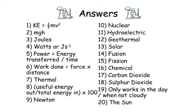Number seven: thermal. Number eight: useful energy out divided by total energy in, all multiplied by 100. Number nine: the newton. Number ten: nuclear.